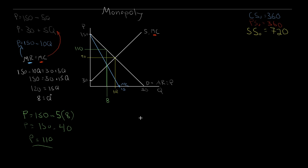Just to pause here — we've done this for a monopolist, but as stated at the start, the marginal revenue being twice the slope of demand is true for any firm with market power: a monopolist, an oligopolist, or a firm in a monopolistically competitive market. The process for finding Q-star and price is exactly the same in all these cases. The distinction between monopoly and monopolistic competition comes later when we talk about the long run.